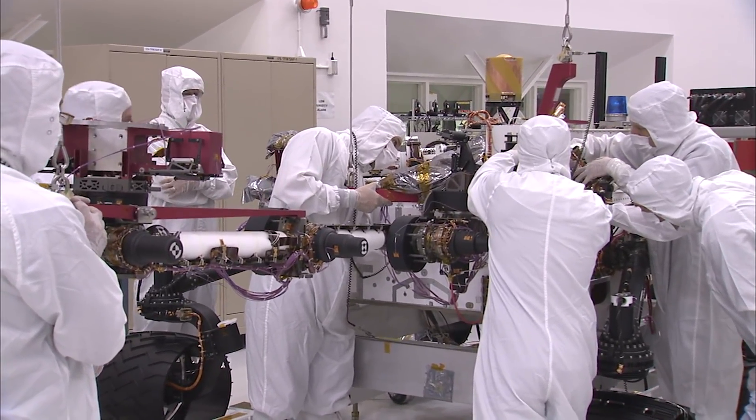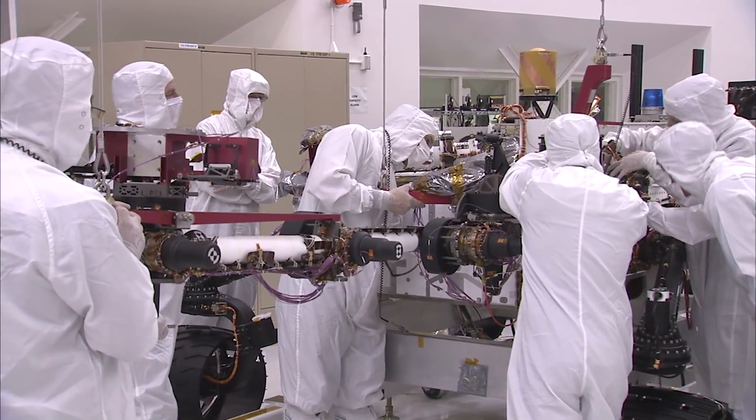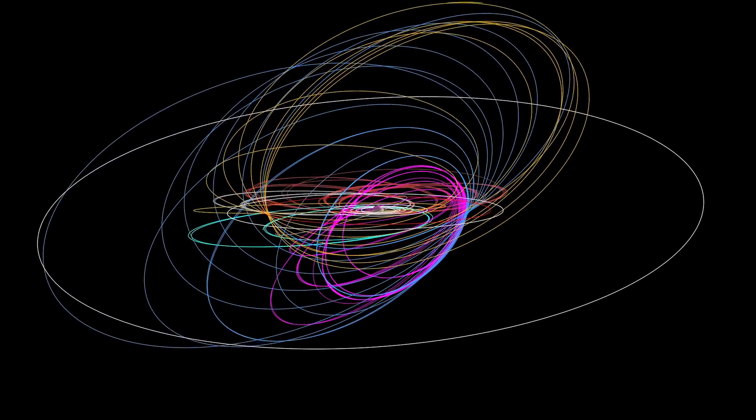To be able to do this engineering, to thread that needle between Saturn and its rings, is really challenging. That requires something called astrodynamics. Okay, so what is astrodynamics? It's a form of engineering, but when we think about engineering typically, we think about people who are using physics and technology to build stuff. Astrodynamicists are building flight paths that will take our spacecraft to where they need to go.